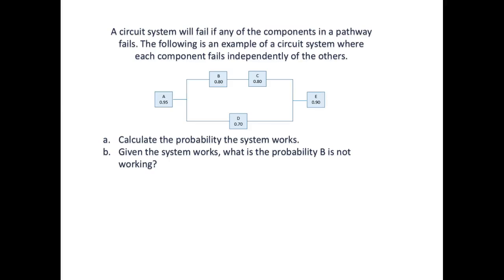In this example we will cover the multiplication rule for independent events and conditional probabilities. A circuit system will fail if any of the components in a pathway fails. The following is an example of a circuit system where each component fails independently of the others. Let's calculate the probability that the system works.